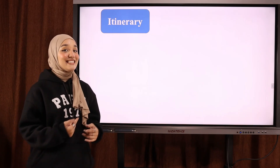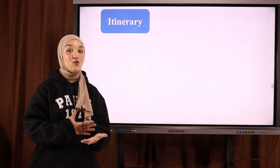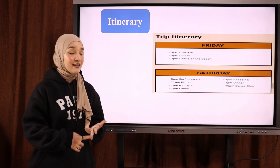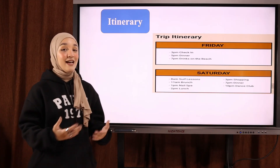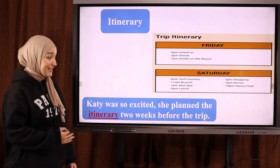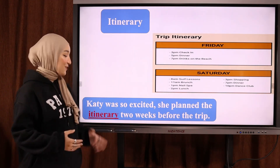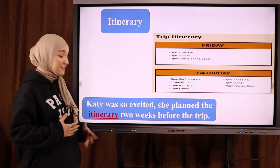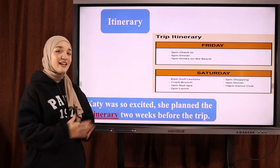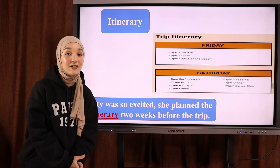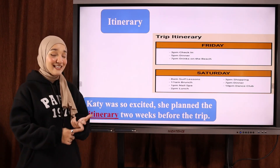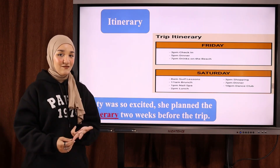The next word is 'itinerary', which is a plan of the trip — مخطط أو برنامج للرحلة. The itinerary can include the date of departure, the date of return (تاريخ الذهاب، تاريخ العودة), or the activities you are going to do during the trip. Example: 'Katie was so excited, she planned the itinerary two weeks before the trip' — نظّمت برنامج للرحلة أسبوعين قبل الرحلة. So itinerary includes the destination (الوجهة), the duration — how many days you're going to stay — and the activities.